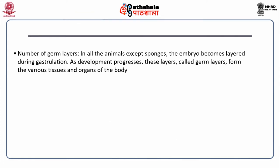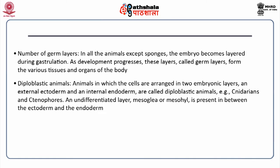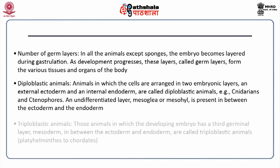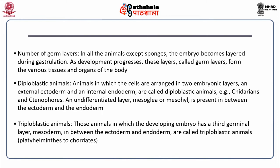Based on the number of germ layers, animals are also classified. In all animals except sponges, the embryo becomes layered during gastrulation, and these layers called germ layers form the various tissues and organs of the body. Diploblastic animals have cells arranged in two embryonic layers — an external ectoderm and an internal endoderm — for example cnidarians and ctenophores. An undifferentiated layer mesoglea is present between the ectoderm and endoderm. Triploblastic animals have a third germinal layer, the mesoderm, between ectoderm and endoderm; examples include phyla from platyhelminthes to chordates.